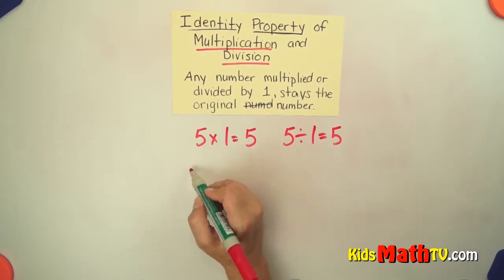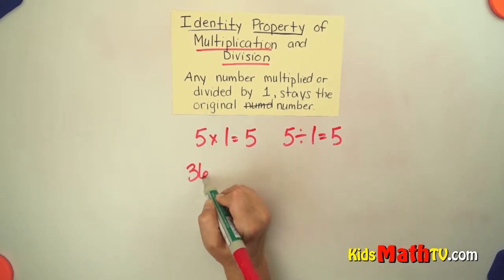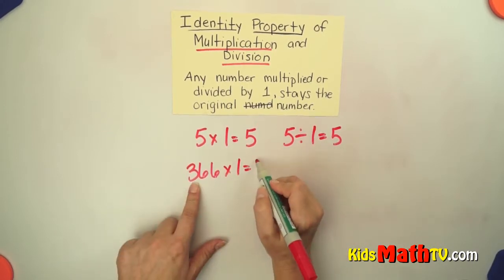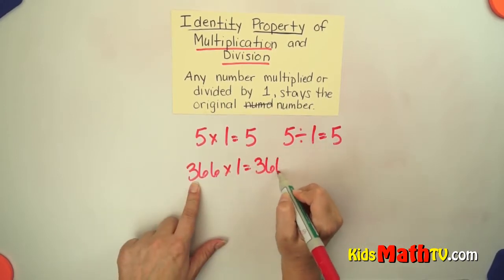We can make a bigger number. Let's say 366. If we multiply it by one, we get that original number, 366.